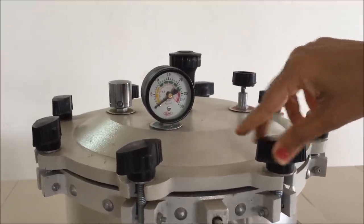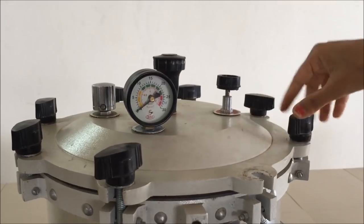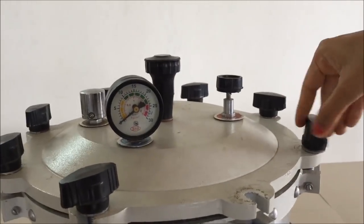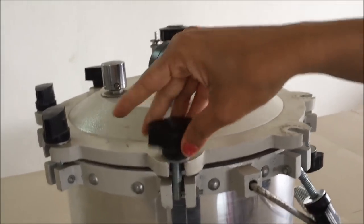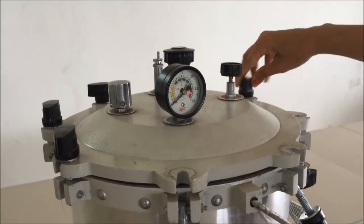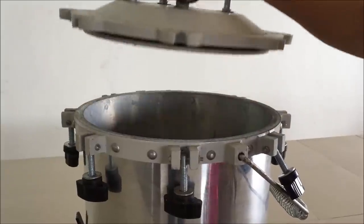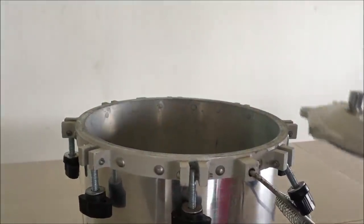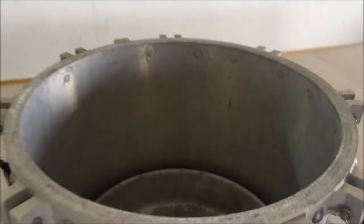Autoclave also having several pairs of nuts which are used to tie its body to the lid of autoclave. In between the top body and bottom body there is a rubber gasket or rubber valve which creates a vacuum and allows the pressure to stay inside the autoclave.